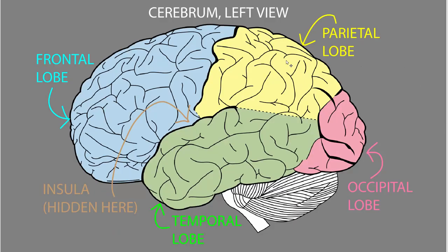The cerebral cortex is divided into structural areas called the frontal, parietal, temporal, and occipital lobes, as well as an area called the insula. There are landmarks on the surface of the cerebrum that divide up arbitrarily named lobes: the frontal lobe in front, the parietal lobe more posteriorly, the temporal lobe inferior to that, and the most posterior is the occipital lobe. The insula is hidden — you have to pry apart the temporal and frontal lobes to find that area of cerebral cortex underneath.